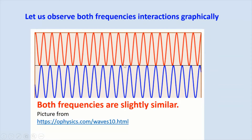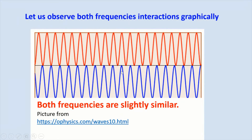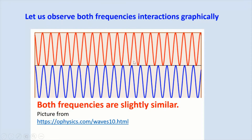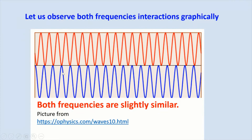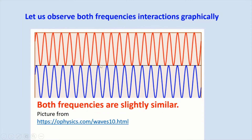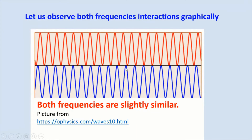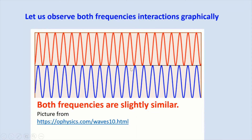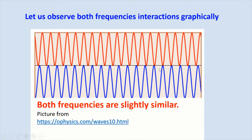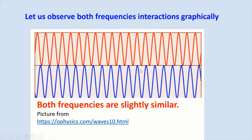Let's look at both frequency interactions graphically. Here we have both sound frequencies represented by the red and blue waves. They are traveling together and interacting with each other. Because both have similar frequencies, they are at some points in phase and some points out of phase. We can spot this by observing crests and troughs — here we have destructive interference, and at some points we have constructive interference.